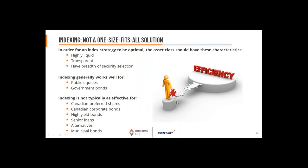Indexing, while a simple default solution, is not necessarily a one-size-fits-all solution. It works well for public equities and government bonds, but may not work as well for things like Canadian preferred shares, corporate bonds, high-yield bonds, senior loans, alternatives, and municipal bonds. These are primarily fixed income asset classes that aren't as liquid or transparent as equities, making the market-making and indexing process more difficult. That's why in Canada, particularly, you've seen significant growth in active ETFs.